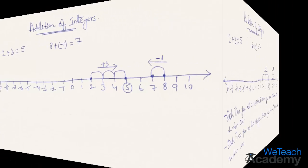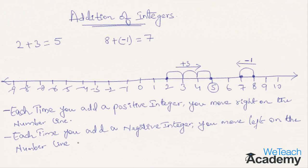In short, if you would like to add a positive integer, then you need to move towards the right on your number line. If you would like to add a negative integer, then you need to move the desired number of steps to the left on your number line. This is the concept of addition of integers. Now let me show you the same in the form of a few more examples.